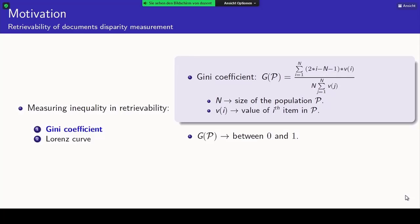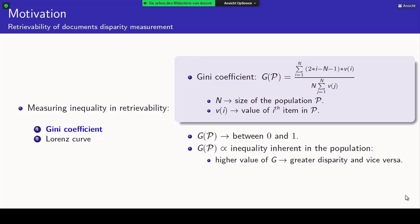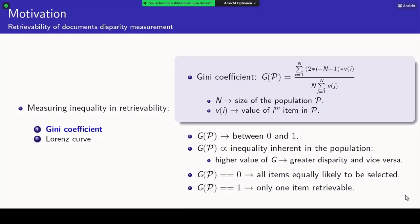The higher the inequality, the closer the Gini coefficient is to 1. If we consider total equality — everyone in the population having the same amount of wealth — the Gini coefficient will be 0. In the case of document retrievability, when Gini coefficient is 0, all documents are equally retrievable for all queries submitted to the system.